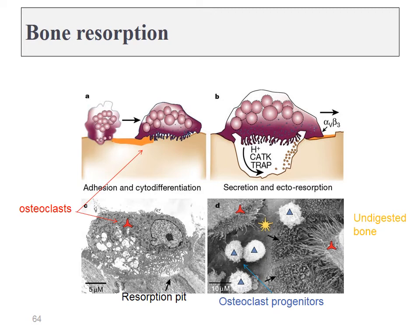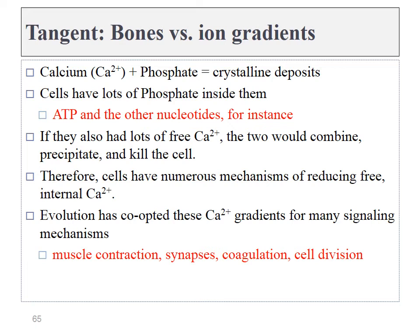Osteoclasts can secrete hydrochloric acid and some digestive enzymes to digest bone tissue, releasing calcium back into the bloodstream. This brings up a very important concept: calcium plus phosphate turns into a crystal on its own — this requires no enzymes, although enzymes could speed it up. All of our cells have lots of phosphate floating around the cytoplasm. ATP contains three phosphates, and every time we use one of those molecules for energy, it leaves a phosphate floating around. DNA and RNA are also composed of a sugar phosphate backbone, so there always has to be plenty of phosphate floating around our cells.